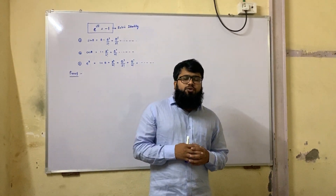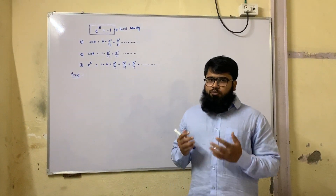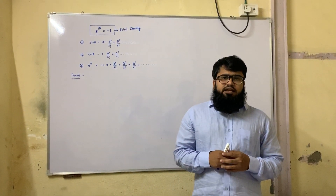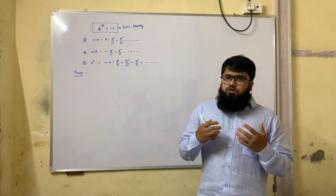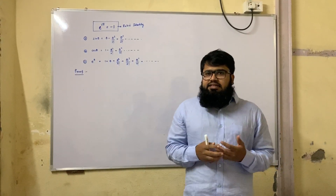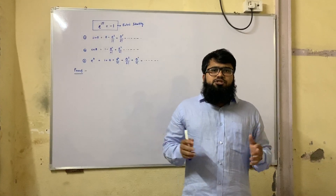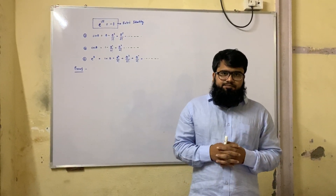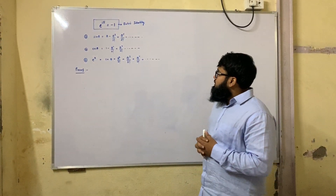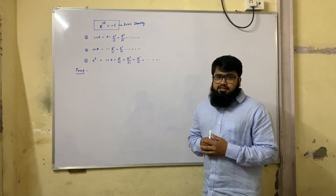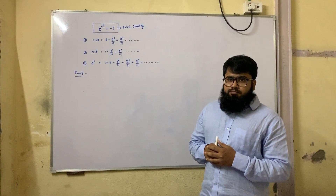Hello guys, today we are going to prove a very important formula. That formula was derived by Euler. It is also called Euler's identity and it is one of the most beautiful equations in all of mathematics. The formula states e to the power i pi is equal to minus 1.